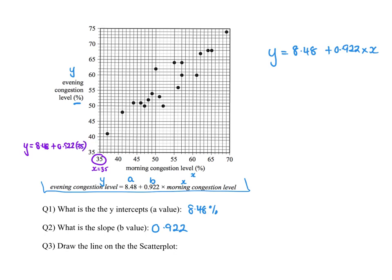So it'll be 8.48 plus 0.922 times 35. I get that to be 40.75. So up along this line, along here, this is when x equals 35. I get 40.75, so it's roughly there. I'm drawing it around on the 40, nearly on the 42.